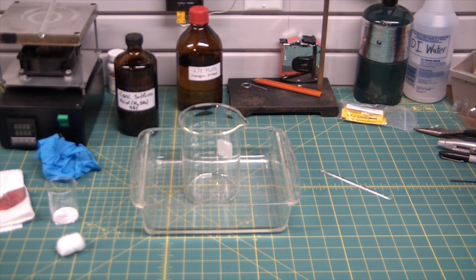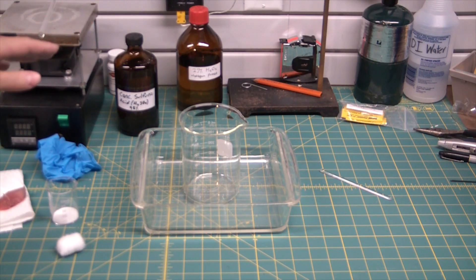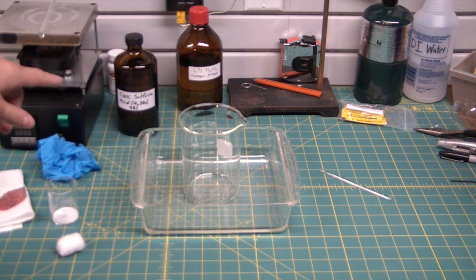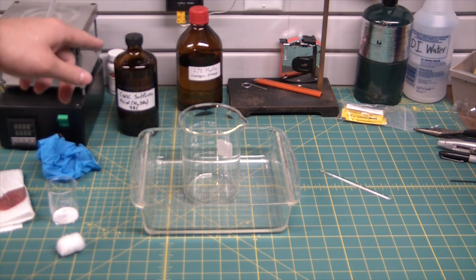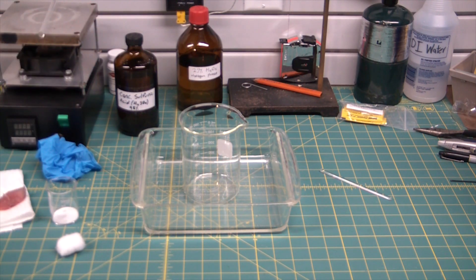Now piranha solution is typically a four to one or three to one ratio of concentrated sulfuric acid to one part hydrogen peroxide, and obviously concentrated hydrogen peroxide. So I have some 98% sulfuric and 27% hydrogen peroxide, and we're gonna mix up a little batch of piranha etch and see what it does to a few different substrates here.